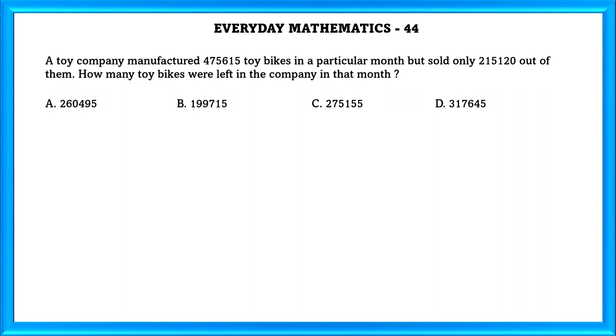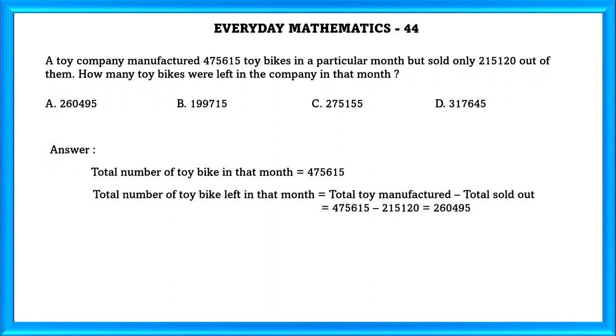Question Number 44: A toy company manufactured 475,615 toy bikes in a particular month but sold only 215,120 out of them. How many toy bikes were left in the company in that month? Number of toy bikes in that month equals 475,615. Total number of bikes left with them equals total toys manufactured minus total sold out which equals 260,495.